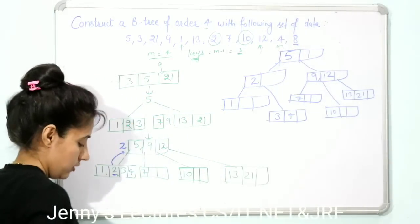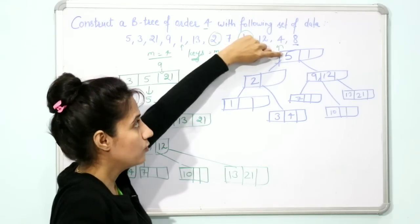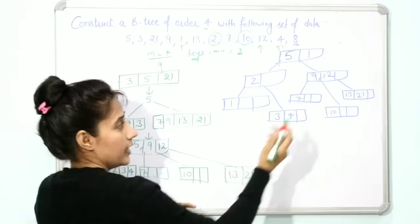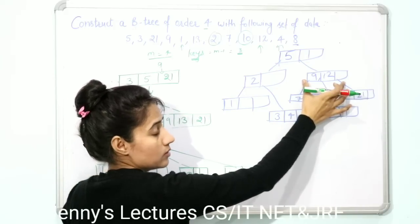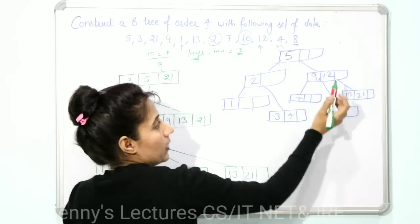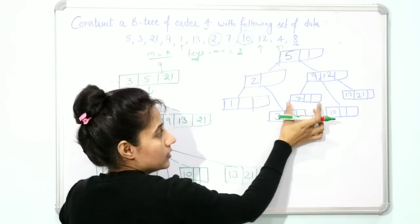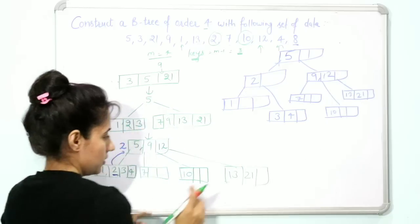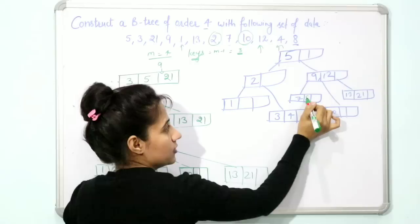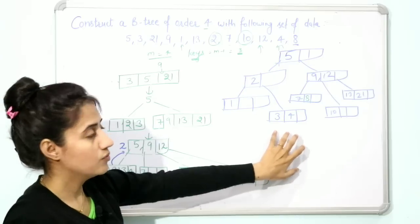The last number is 8. Compare 8 with the root 5 — 8 is greater, so we go to the right part. We cannot insert into internal nodes; insertion must happen at a leaf node. 8 is less than 9, so we go to the left child of 9, which is [7] — a leaf node. Since 8 is greater than 7, it is inserted after 7: the node becomes [7, 8]. This is the final B-tree of order 4.